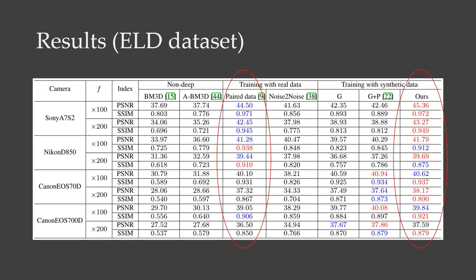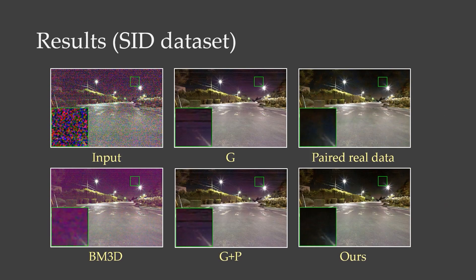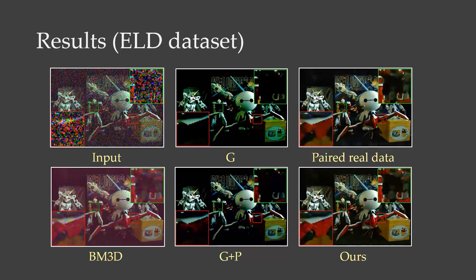Consequently, the denoising network trained with our noise model yields striking performance, which often outperforms the network trained with paired real data from the SID dataset. It can be seen that the random noise can be suppressed by the heteroscedastic Gaussian noise model. But the resulting colors are distorted, the banding pattern artifacts become conspicuous, and the image details are barely discernible. In contrast, our model produces visually appealing results, as if it had been trained with rich paired real data.